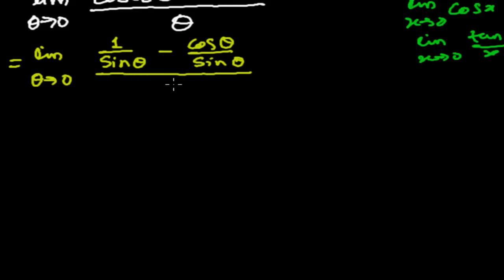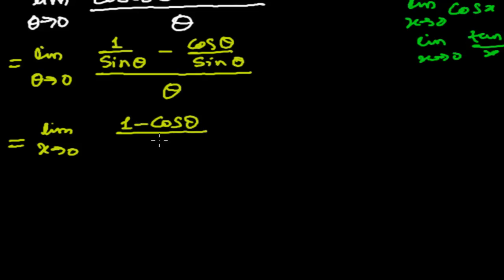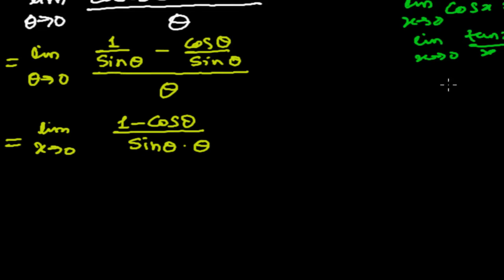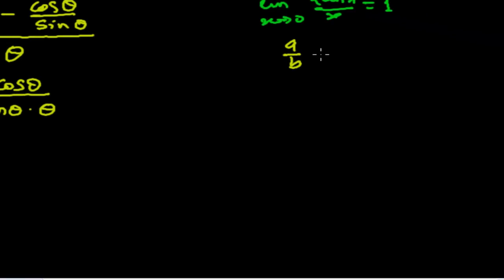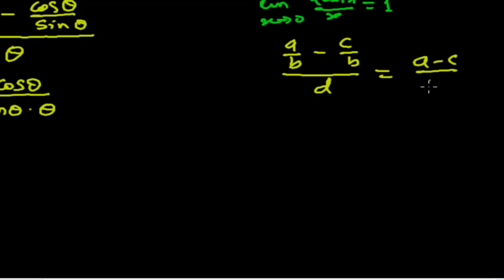All of this is divided by θ. So what we get is: limit as θ tends to 0 of (1 - cos(θ)) divided by sin(θ), times 1/θ. The sin(θ) comes down. You know the formula: if you have (a - c) divided by (b times d), that's what we get when we combine the fractions. Exactly that form is being used here.